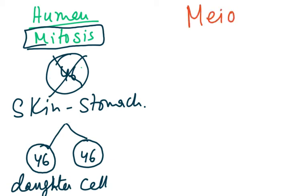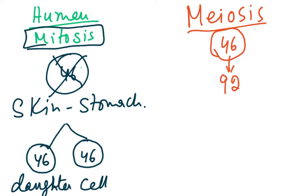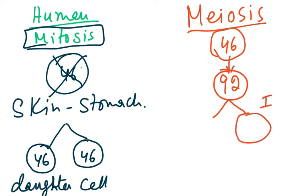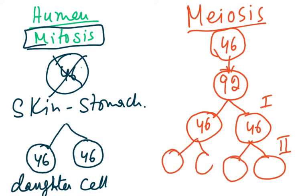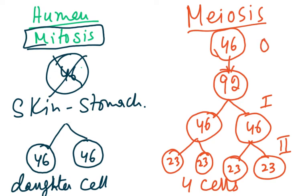In meiosis, the parent cell starts with 46 chromosomes, DNA replication occurs giving 92, then meiosis I produces two cells each with 46, and meiosis II produces four cells each with 23 chromosomes. This meiosis only takes place in the ovary in the female and in the testes in the male.